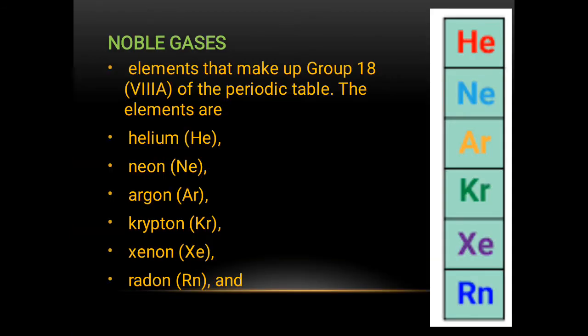Now, we see what are noble gases. The elements that make up group 18 or group 8A of the periodic table are commonly called as noble gases. And they are helium, neon, argon, krypton, xenon, and radon. One thing is very obvious that every time I am calling them noble gases, means they are all gases.